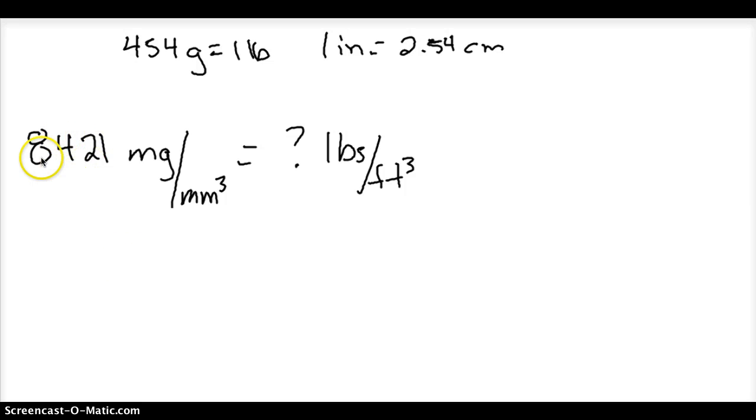Okay, this is a level 4. We have 8,421 milligrams per millimeters cubed, so this would be a density, and we want to take that over to pounds per feet cubed.